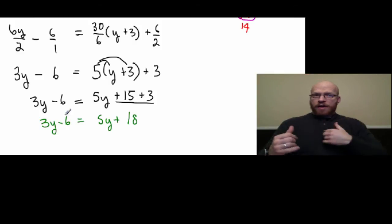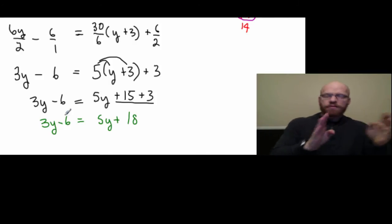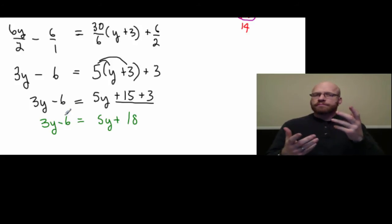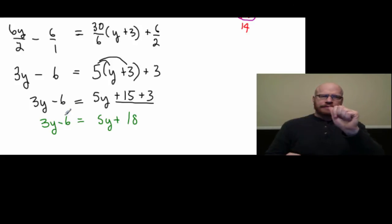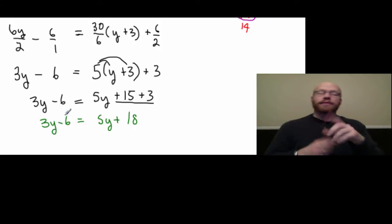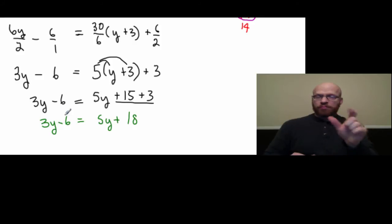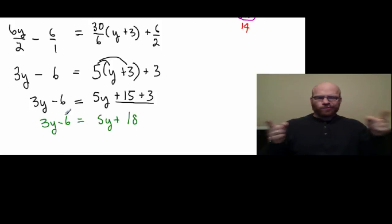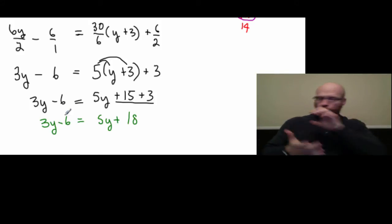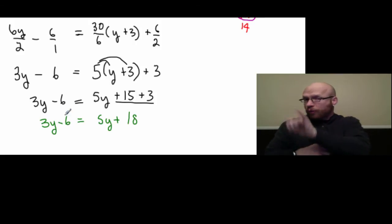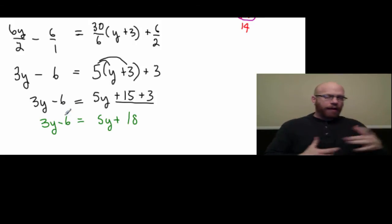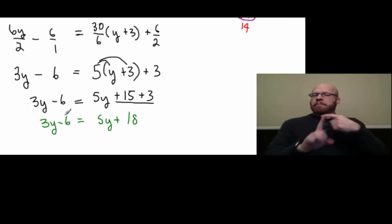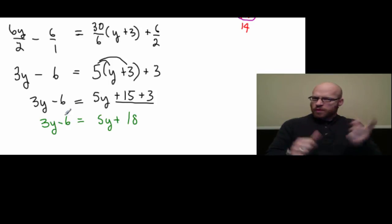And now combining like terms on the left side and the right side, we've simplified both sides. And now it's time to have the constant terms on one side of the equal sign and the variable terms on the other side. I see that we have 3y and 5y. I need to make a decision — I could subtract 5y from 3y, or I could subtract 3y from both sides. I know 5y minus 3y will be a positive 2y, so I'm going to approach it that way.